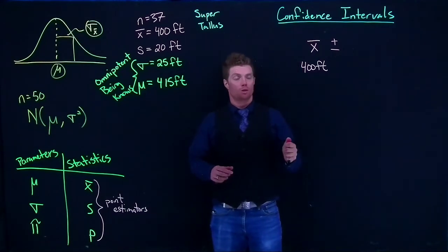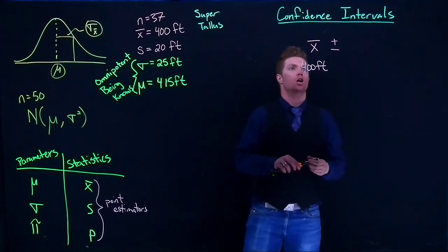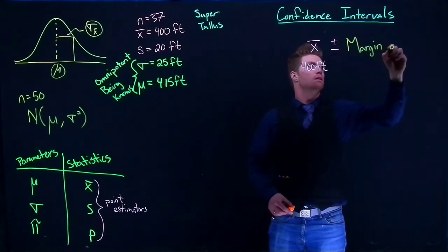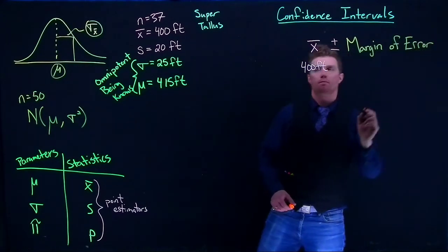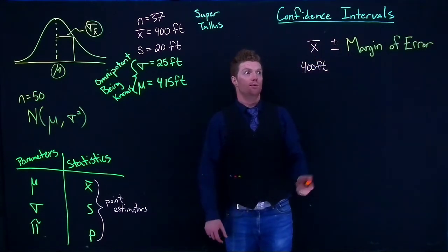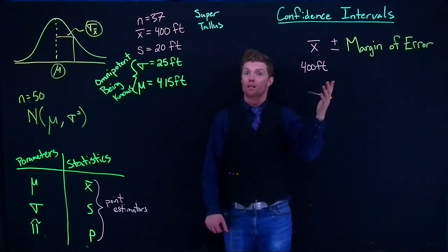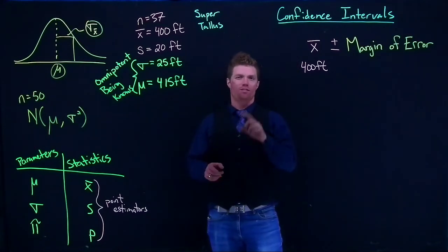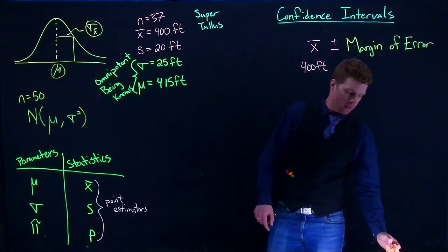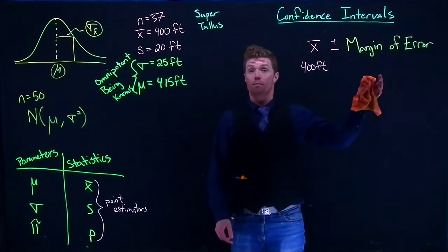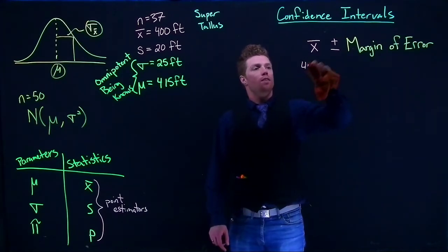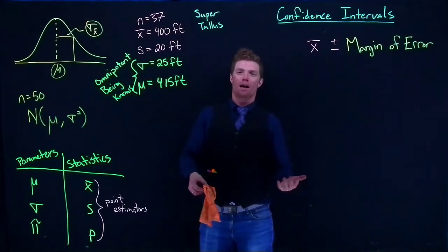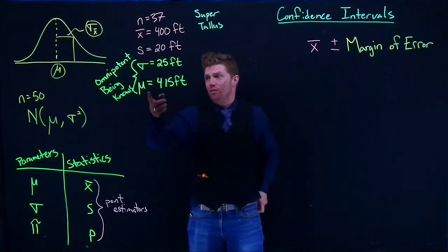What I need to do is figure out what this margin of error is and how to calculate it. The nice thing is that the margin of error uses equations we already know, with just one modification. On this first pass, we're going to assume we know what sigma is. We can calculate the margin of error using: ME = z(α/2) × σ/√n. This is if we know the population standard deviation.